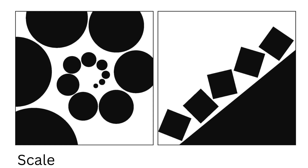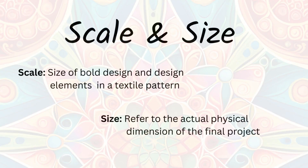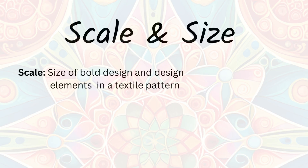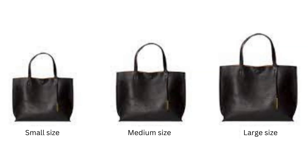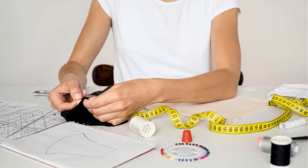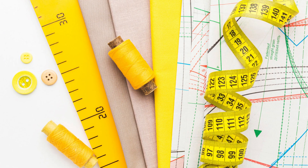Scale and Size: Scale word textile design mein generally design ke motifs aur patterns ke size or proportions ko describe karne ke liye use hota hai. And on the other hand, scale word final product ki measurement ke liye use hota hai, like piece of fabric or clothing. Waise toh hum dono terms use kar sakte hain, per scale term design ke element ke relative proportion ko define karne ke liye designers ke liye zyadha authentic mani jati hai.